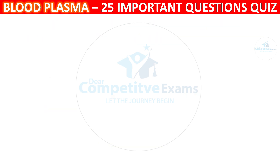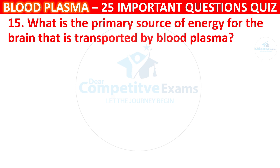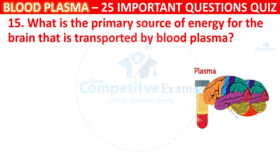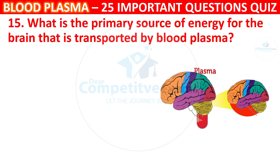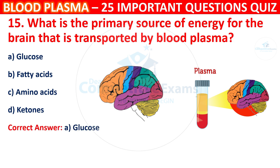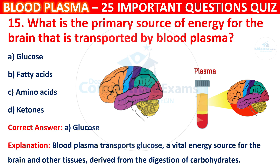Question 15: What is the primary source of energy for the brain that is transported by Blood Plasma? Your options are Glucose, Fatty Acids, Amino Acids, or Ketones. The correct answer is A, i.e. Glucose. Blood Plasma transports glucose, a vital energy source for the brain and other tissues, derived from the digestion of carbohydrates.